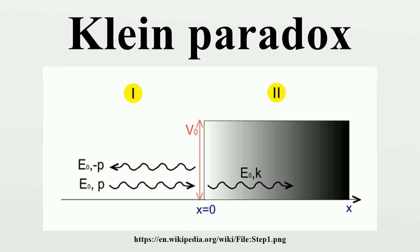Moreover, as the potential approaches infinity, the reflection diminishes and the electron is always transmitted.